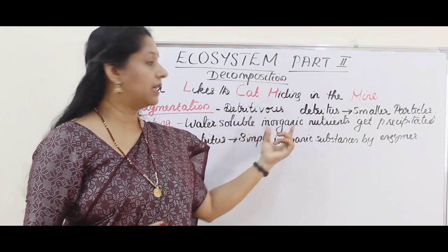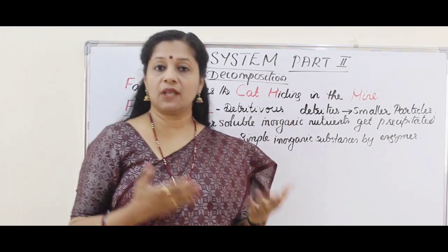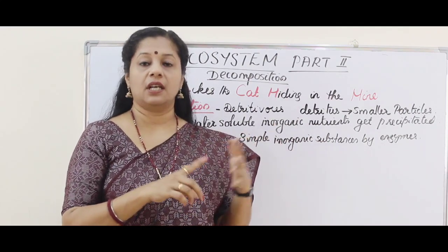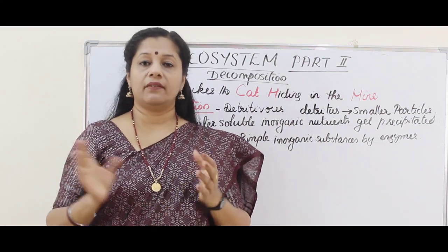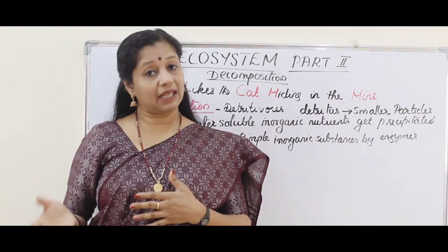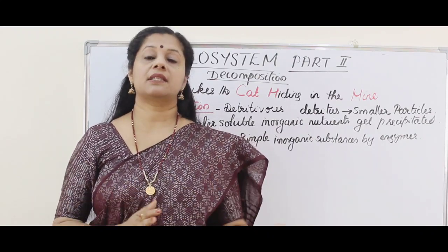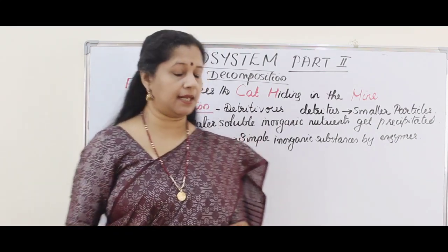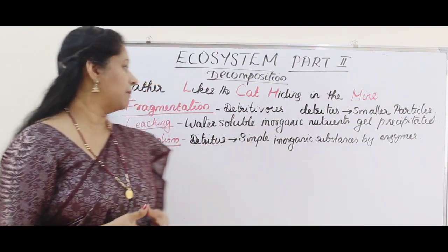It is important to remember that it is inorganic nutrients going down during leaching. Carbohydrate, which has carbon, hydrogen, and oxygen, is an organic substance. Whereas carbon dioxide or water — containing the same elements — are inorganic. Inorganic means outside the living system or non-living; if it is part of a living system, it is organic. So here, only inorganic nutrients get precipitated and become unavailable salts.